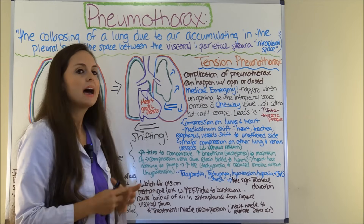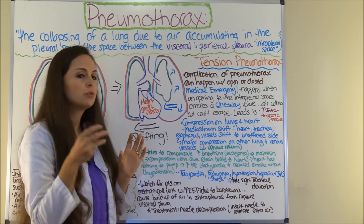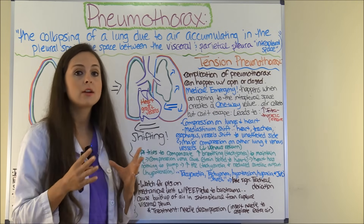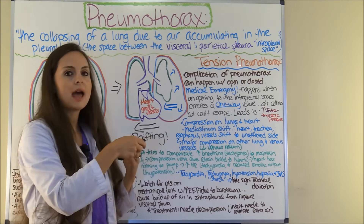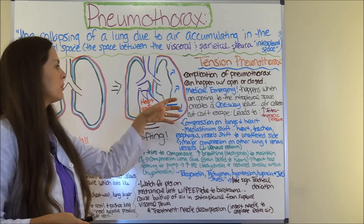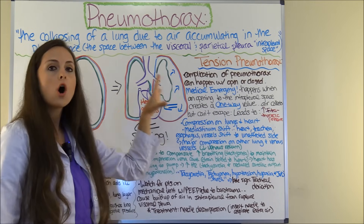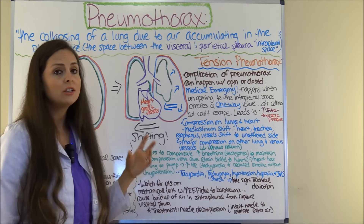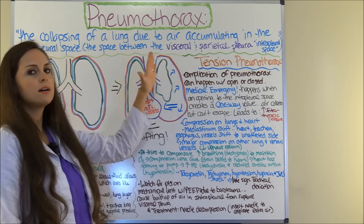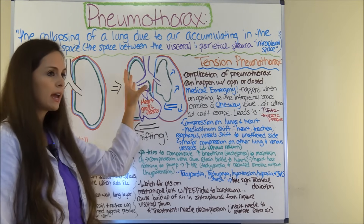A tension pneumothorax happens when an opening to the intrapleural space creates a one-way valve, which leads air to collect in that space but it cannot escape — it just keeps building and building. This is a medical emergency requiring immediate treatment. Tension pneumothorax can happen as a complication of an open or closed pneumothorax. As pressure builds, it leads to increased thoracic pressure, causing compression on the unaffected lung and the heart. You get a mediastinal shift where your heart, trachea, esophagus, and vessels shift to the unaffected side.